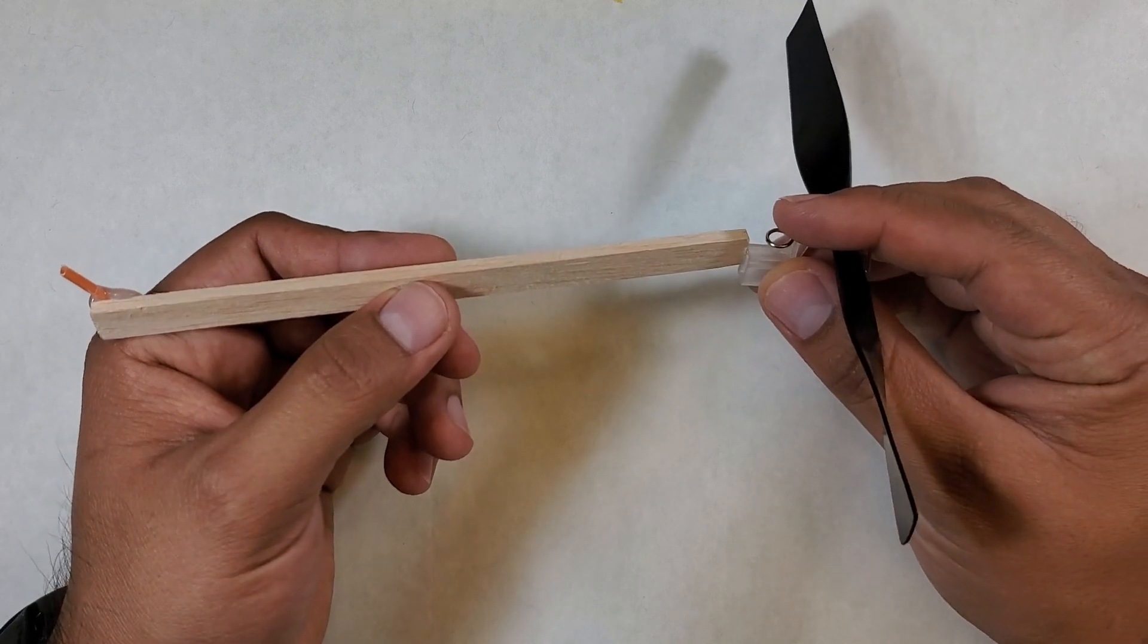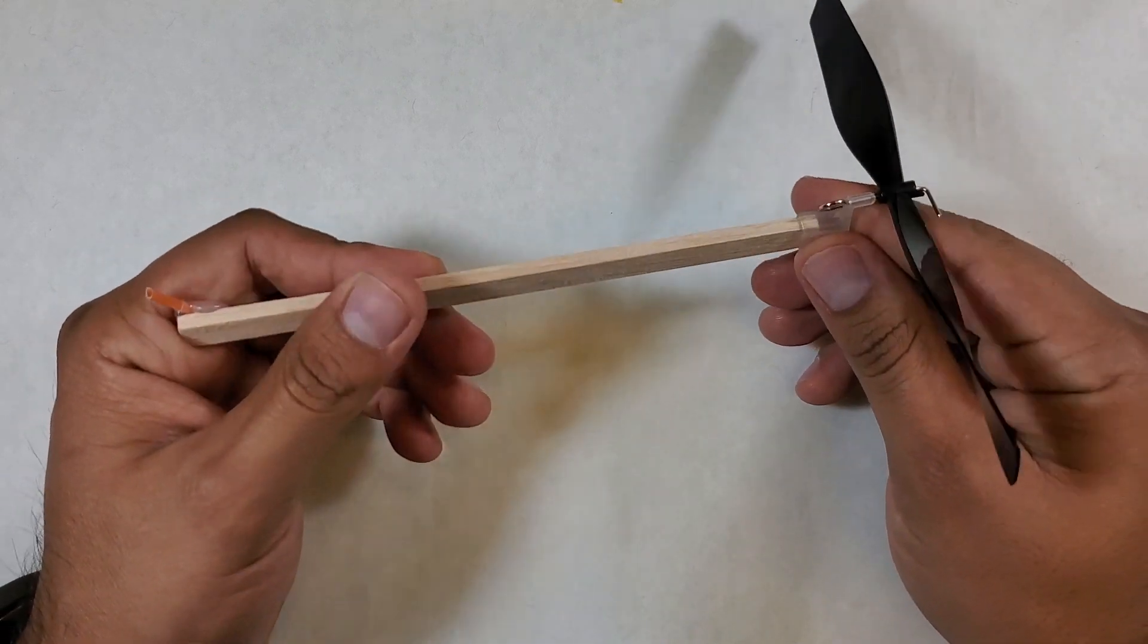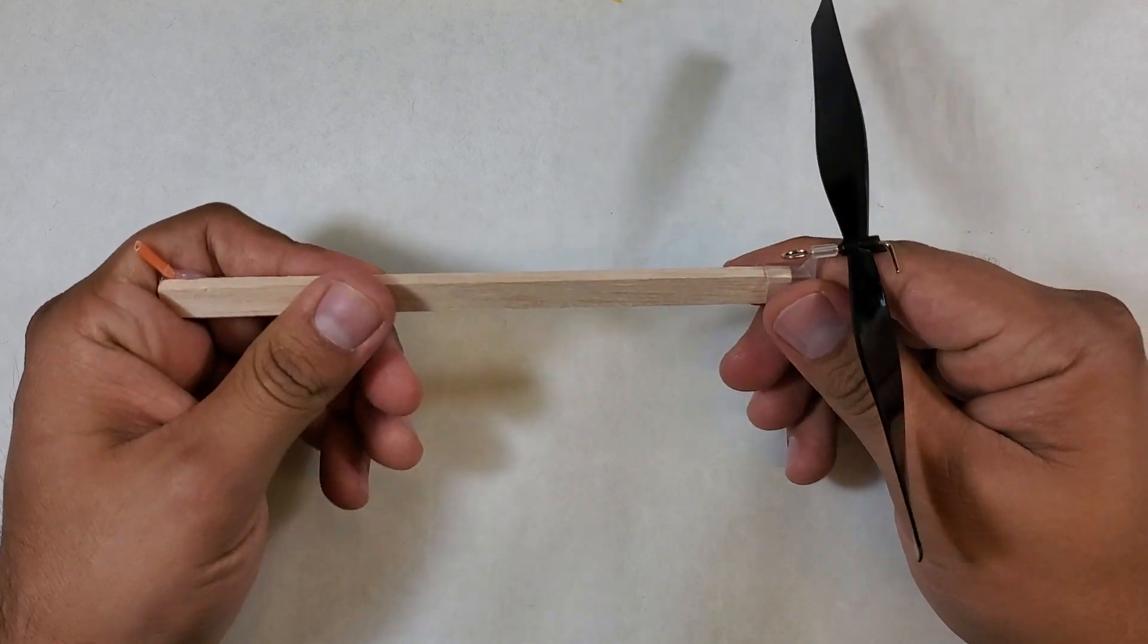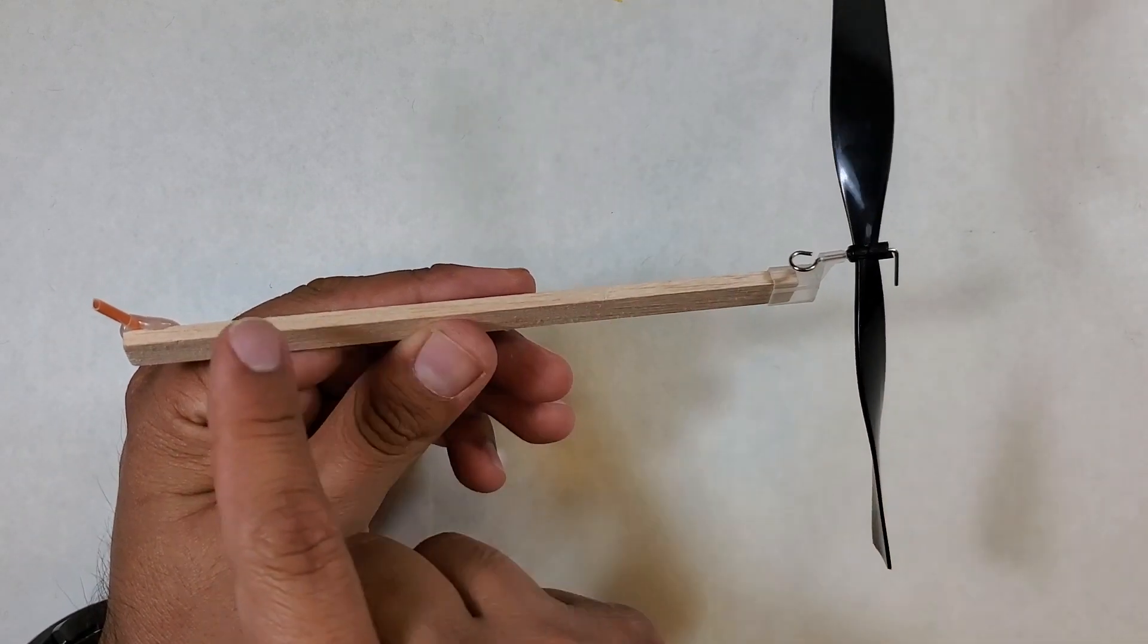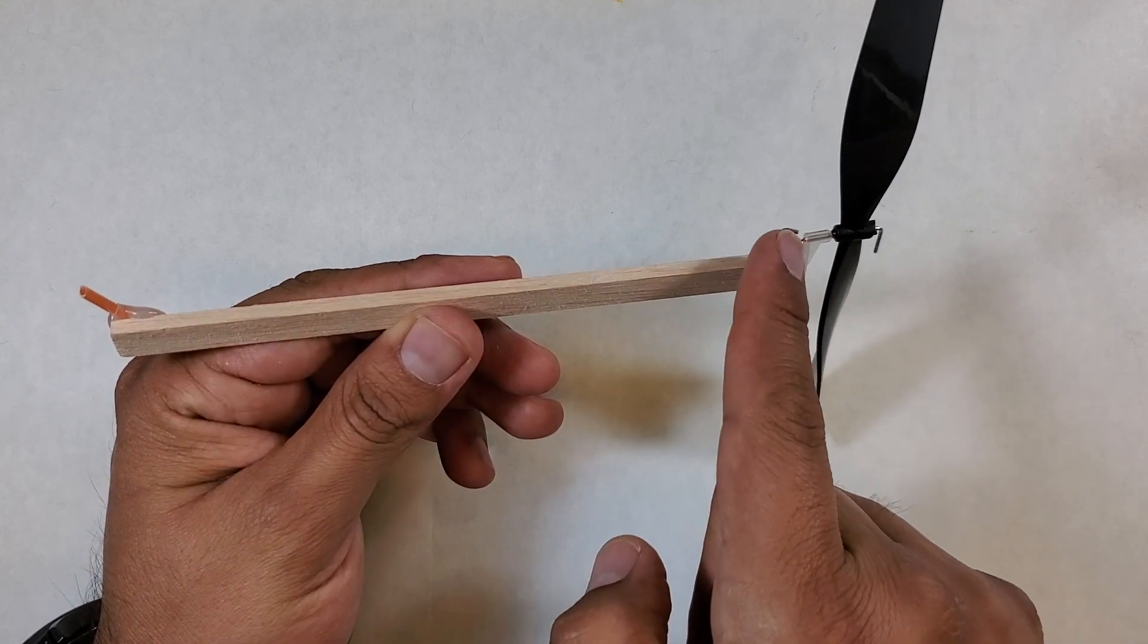To put this thing together, we have to insert the wood stick into the propeller bracket. Make sure the propeller hook is on the same side as the tiny tube at the other end of the stick.